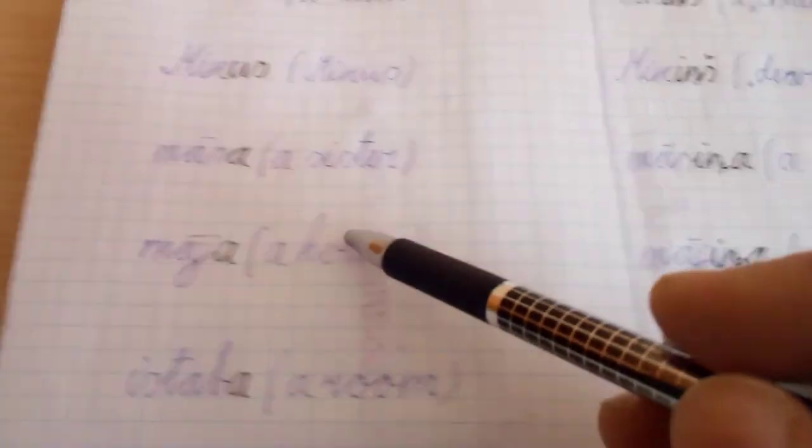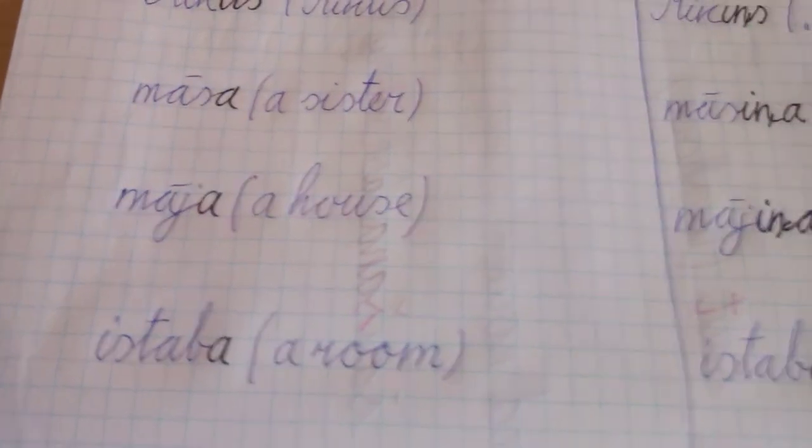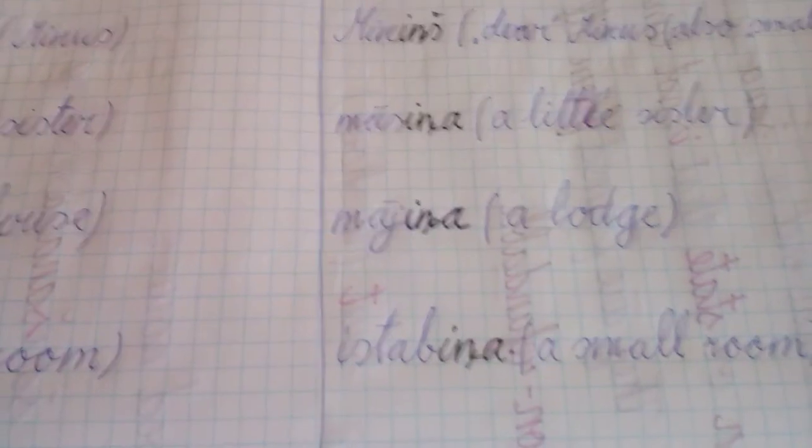Māsa, a sister. Māsiņa, a little sister. Māja, a house. Mājiņa, a lodge.